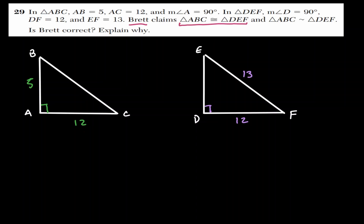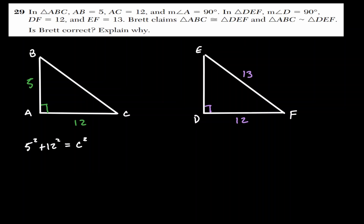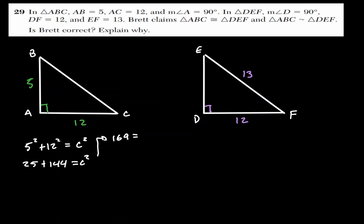For triangle ABC: 5 squared plus 12 squared equals the hypotenuse squared. That gives 25 plus 144 equals C squared, so C squared equals 169, and the hypotenuse is 13. For the triangle on the right: 12 squared plus B squared equals 13 squared. So 144 plus B squared equals 169, giving B squared equals 25, and B equals 5.